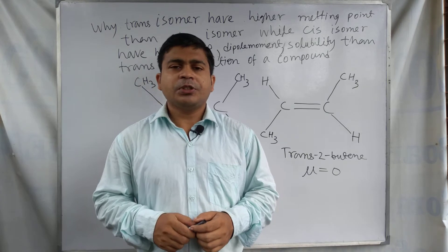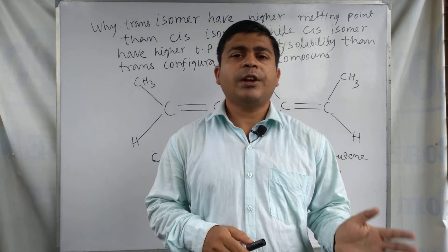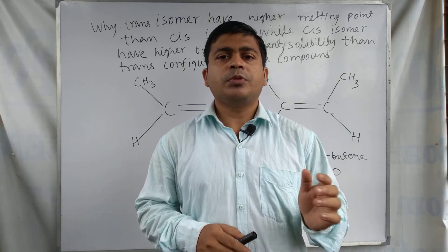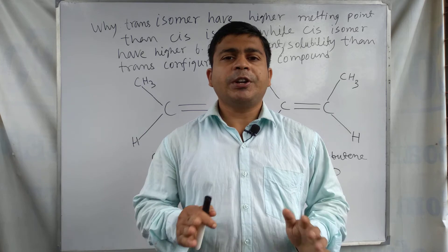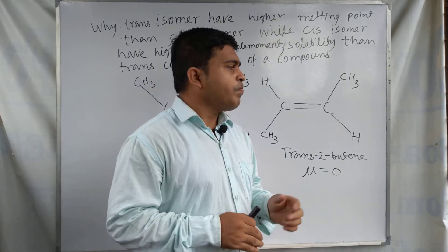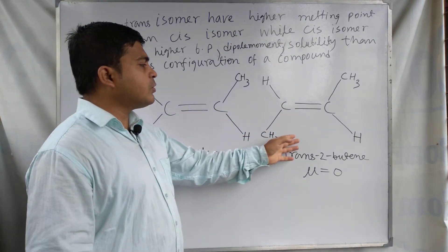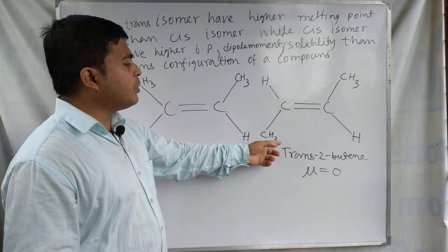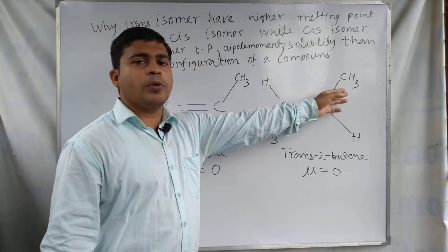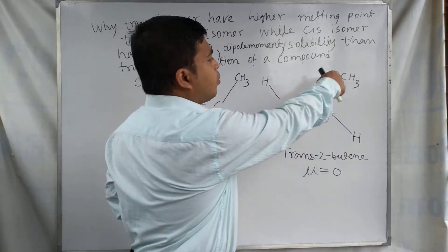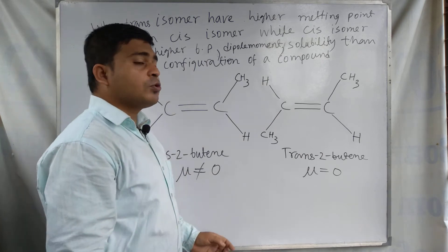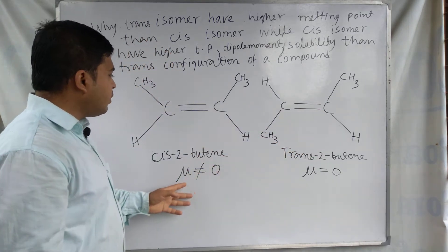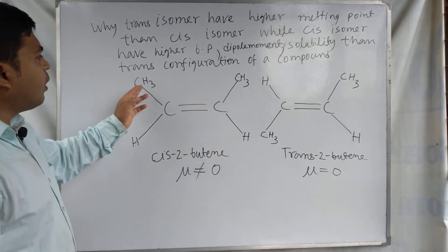Let us start our discussion about the physical properties of geometrical isomers — that are cis and trans isomers. Cis and trans configurations of a compound show different physical properties. Look at this compound: this one is called the trans isomer because the two methyl groups are in opposite directions. Among methyl and hydrogen, methyl has higher priority on both carbons, so when the higher priority groups are in opposite directions, that is called the trans configuration. In cis configuration, the methyl groups are on the same side.